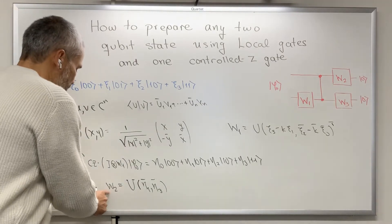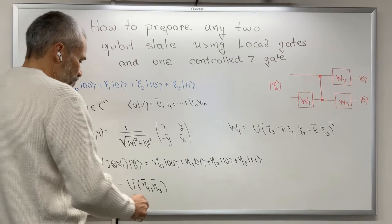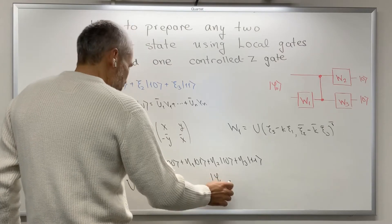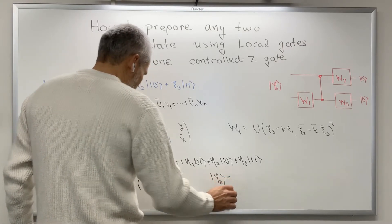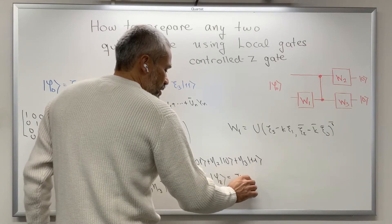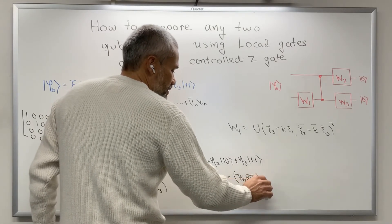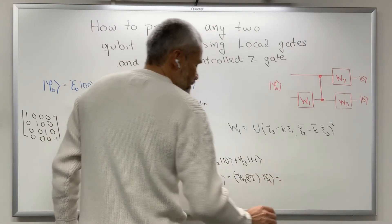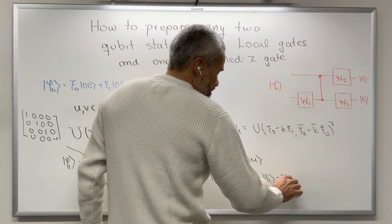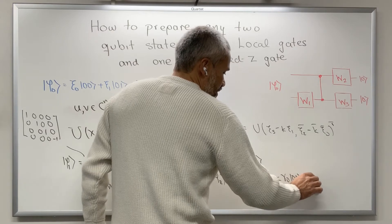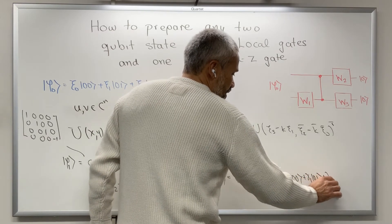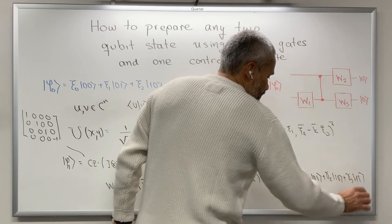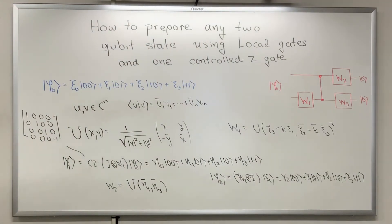With this unitary matrix we compute another state: c̃2 equals W2 tensor product with the identity, times c̃1. This equals γ₀|00⟩ + γ₁|01⟩ + γ₂|10⟩ + γ₃|11⟩.